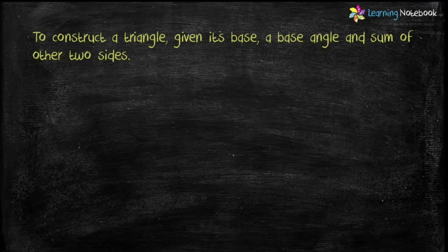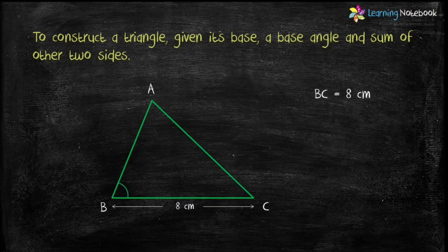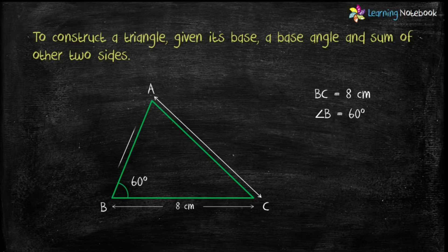So students, let's start and see what is base, base angle, and sum of other two sides with the help of the following example. Students, here base is BC, base angle is B or C, and sum of other two sides means AB plus AC.